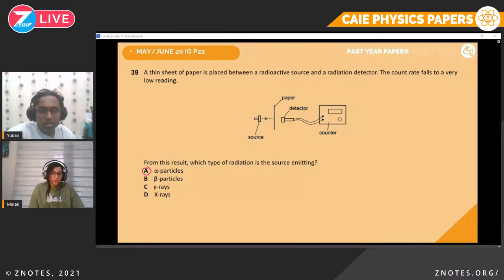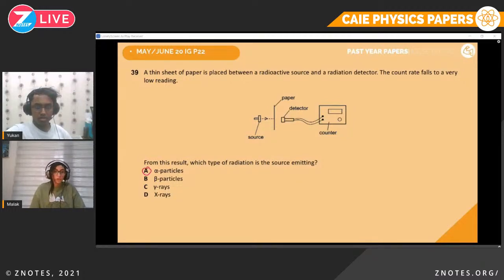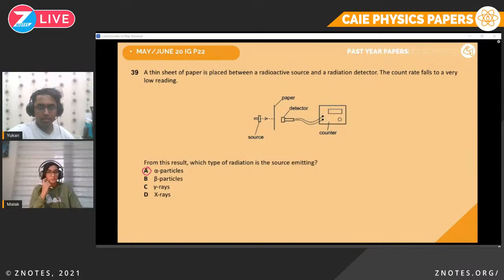Question thirty-nine. A thin sheet of paper is placed between a radioactive source and a radiation detector. The count rate falls to a very low reading. Which type of radiation is the source emitting? Only a thin piece of paper is needed to stop it, which means it's alpha particles — they are highly ionized and stopped very easily by even a thin sheet of paper.